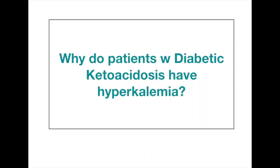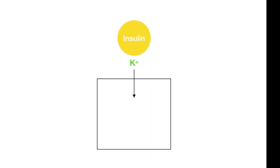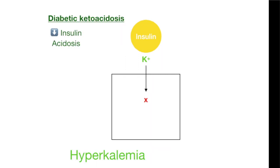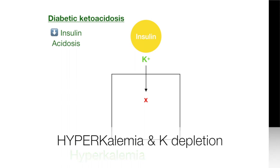However, these patients have hyperkalemia. This is because insulin is involved in moving potassium inside the cell. A lack of insulin along with acidosis caused by ketones leads to hyperkalemia. So patients with diabetic ketoacidosis have hyperkalemia although there is a depletion of potassium from the body.